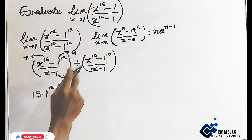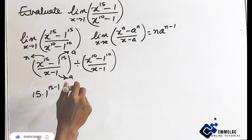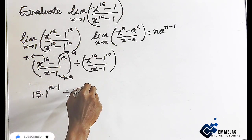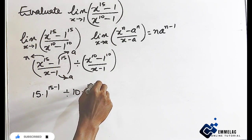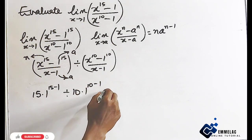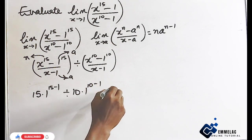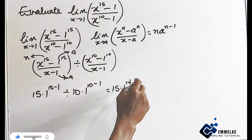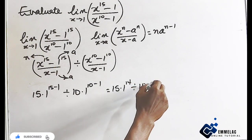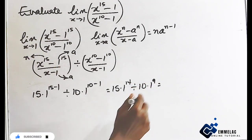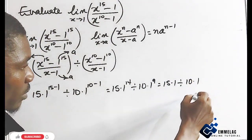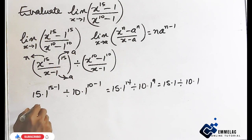Then divided by: here n is 10, then times 1 raised to the power of 10 minus 1. So we have 15 times 1 raised to the power of 14, divided by 10 times 1 raised to the power of 9, which gives us 15 times 1, divided by 10 times 1, giving us 15 over 10.